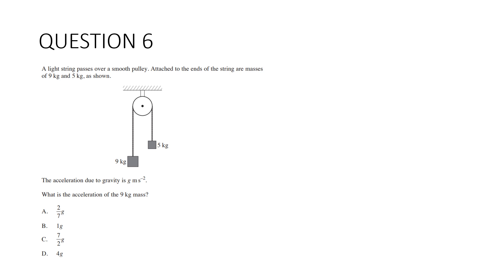Question 6. A light string passes over a smooth pulley. Attached to the ends are masses of 9 kg and 5 kg. The acceleration due to gravity is g meters per second squared. What is the acceleration of the 9 kg mass? We know the whole system is moving toward the heavier weight. There is tension in the string and the tension on both sides is equal. Let's start with the right hand side. We're going to use F equals ma, which in this case m is 5. In this direction, we have tension take away 5g equals 5a. That's our first equation.